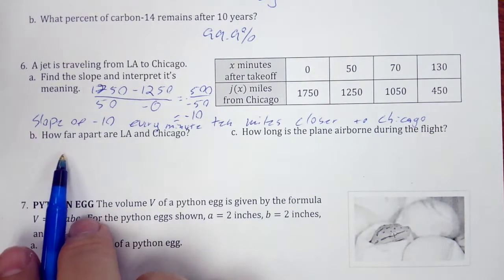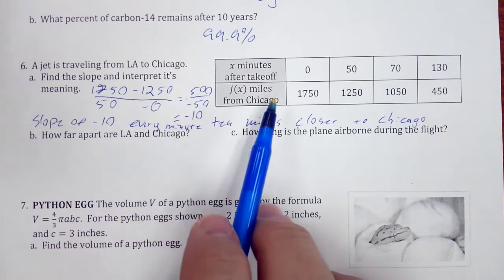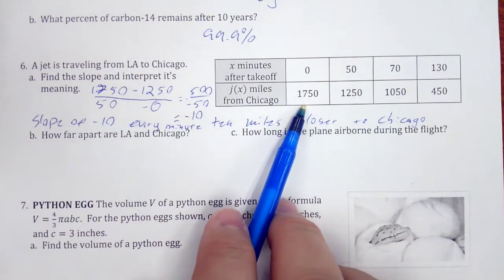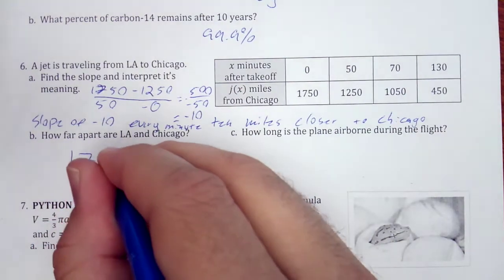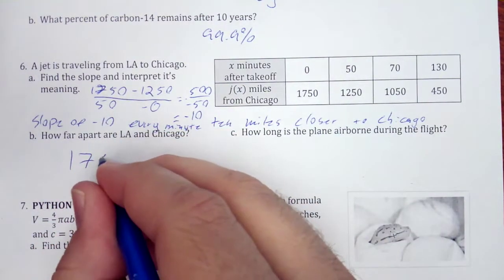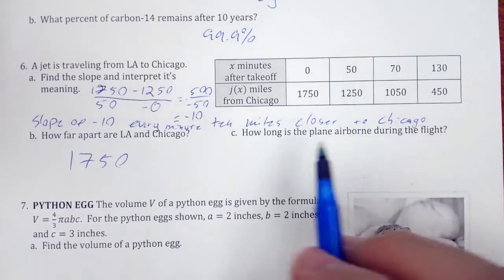Okay, how far apart are L.A. and Chicago? Well, miles from Chicago at 0 minutes. So we have 1750.